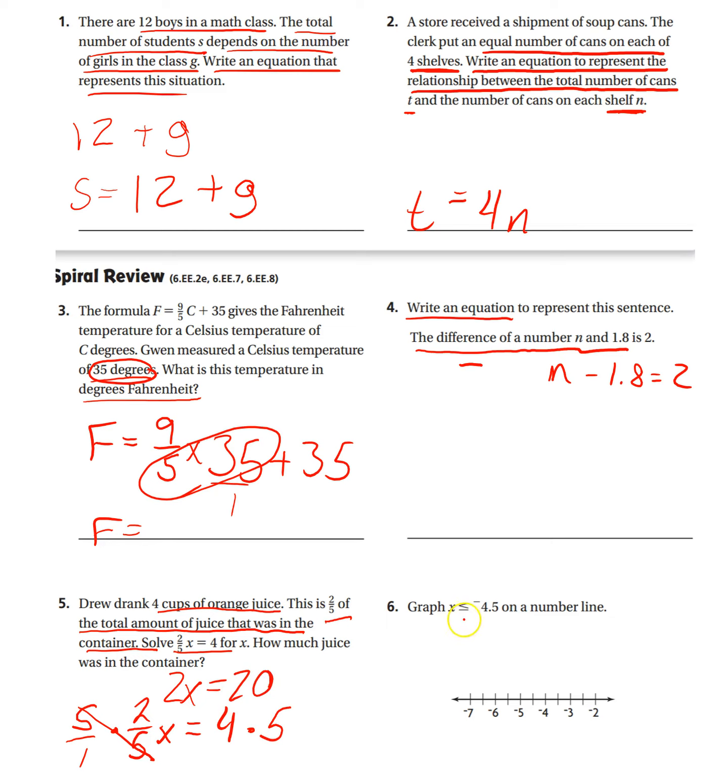Okay, here, graph X is less than or equal to negative 4.5. So negative 4.5 is where I put my circle. Because it has the line underneath, I know I need to shade my circle in. So where is negative 4.5? Well, here's negative 4. Here's negative 5. Negative 4.5 is going to be right in between them.